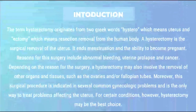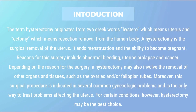Introduction: The term hysterectomy originates from two Greek words — hystero, which means uterus, and ectomy, which means resection or removal from the human body. A hysterectomy is the surgical removal of the uterus. It ends menstruation and the ability to become pregnant. Reasons for this surgery include abnormal bleeding, uterine prolapse, and cancer. Depending on the reason, a hysterectomy may also involve the removal of other organs and tissues such as the ovaries or fallopian tubes. Moreover, this surgical procedure is indicated in several common gynecologic problems and is the only way to treat problems affecting the uterus.